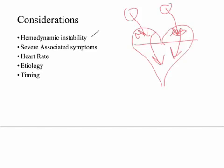Associated symptoms with hemodynamic instability include ischemia to other tissues like the brain, hypoperfusion, cardiogenic shock, and pulmonary edema. That's the first and most important consideration. If there's hemodynamic instability, you're going to admit them to the hospital — not manage them as outpatient.